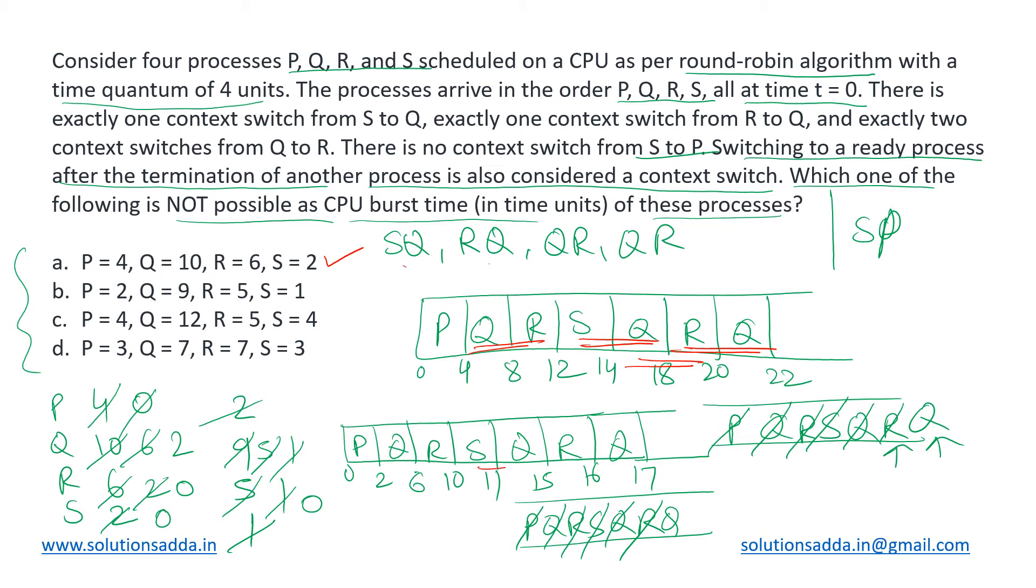First one is SQ. Yes, that exists. Next context switch is RQ. That is also there. Then we have QR and QR. So all the 4 are followed in this one as well.